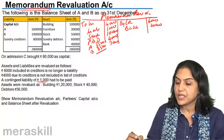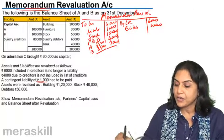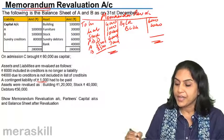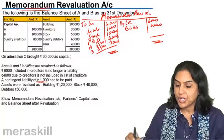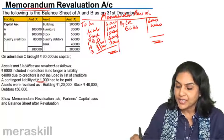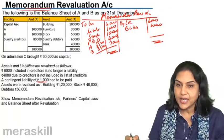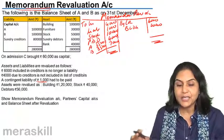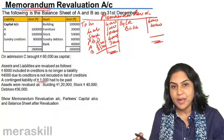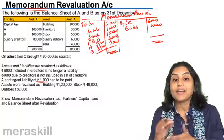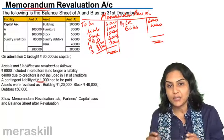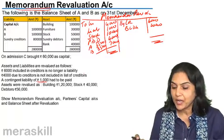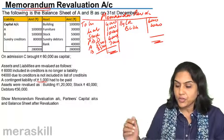This is one part of the memorandum revaluation account. Next comes the second section, where we repeat the same entries but reverse them — we reverse whatever we had done in the first half.